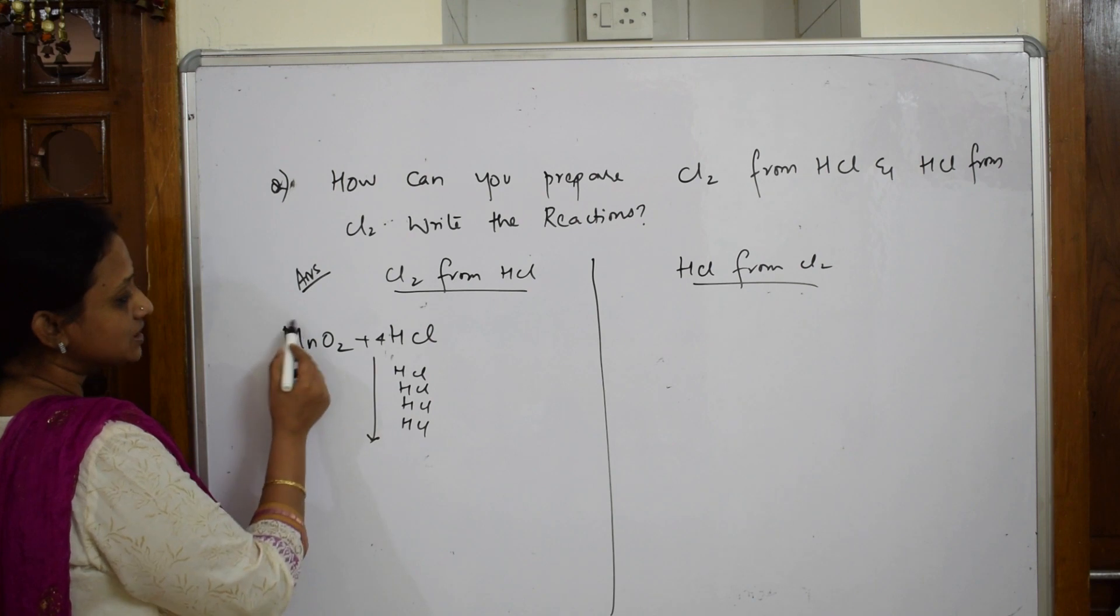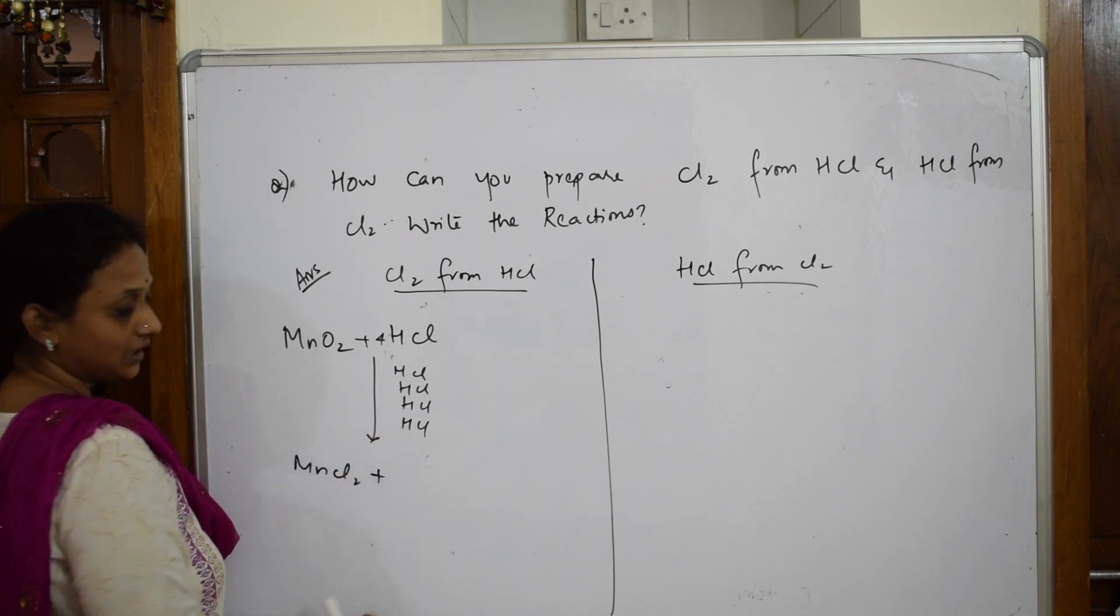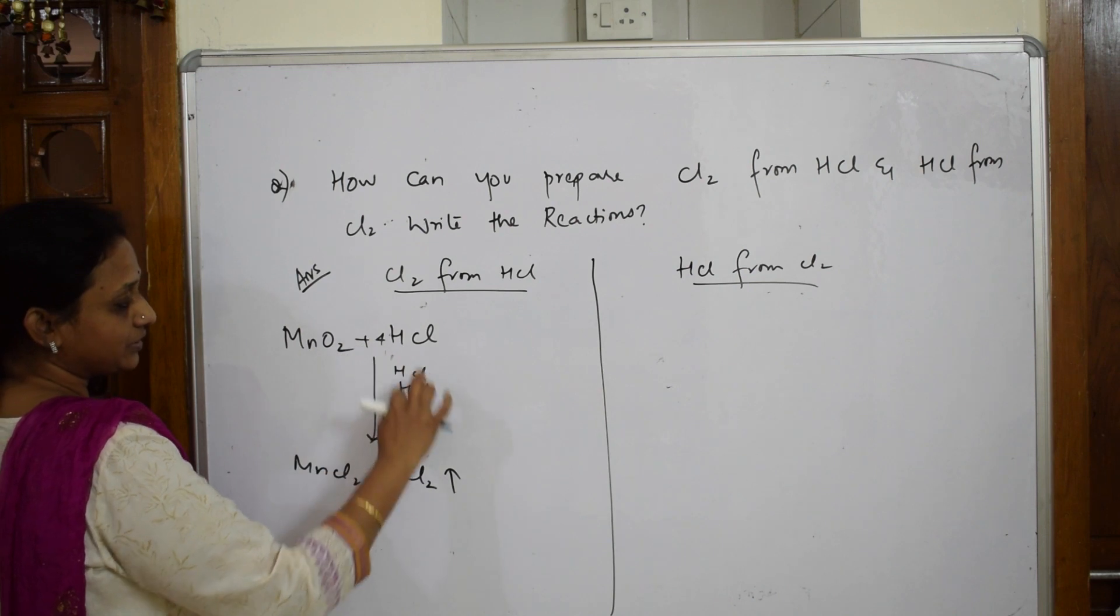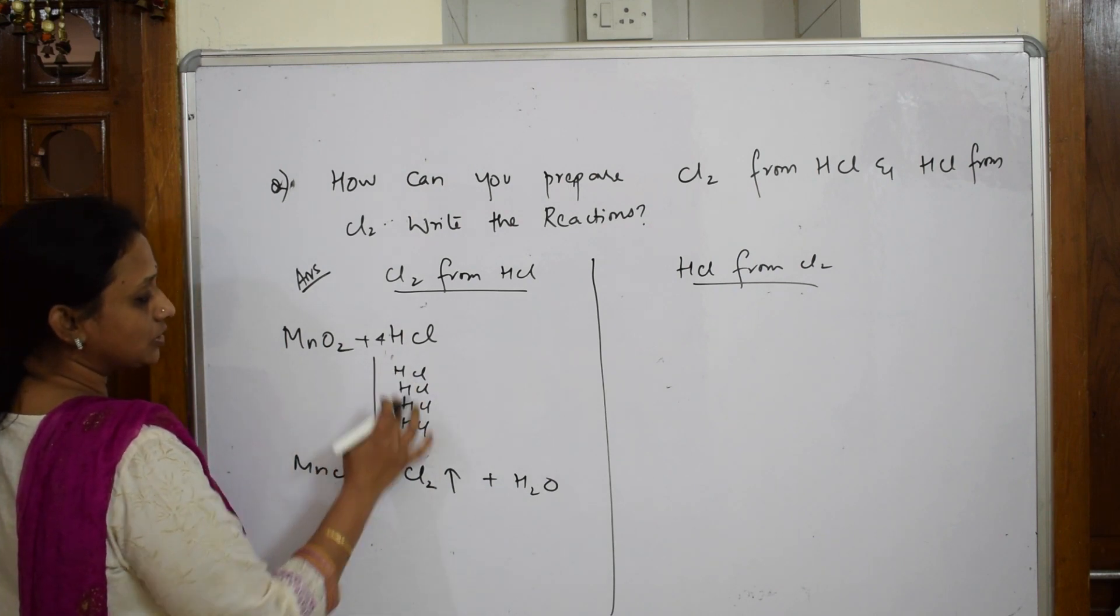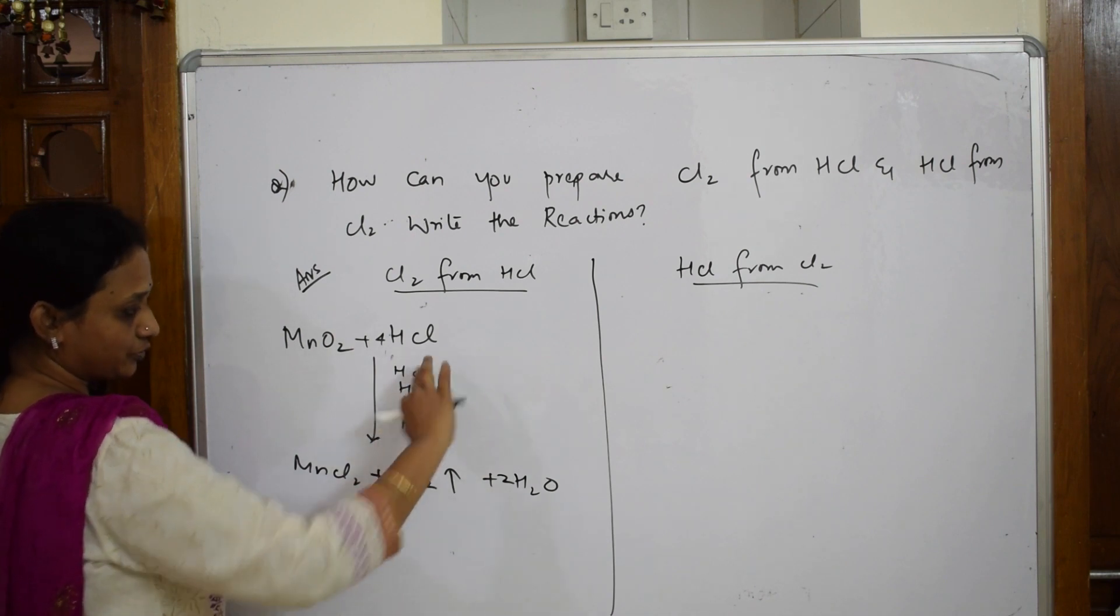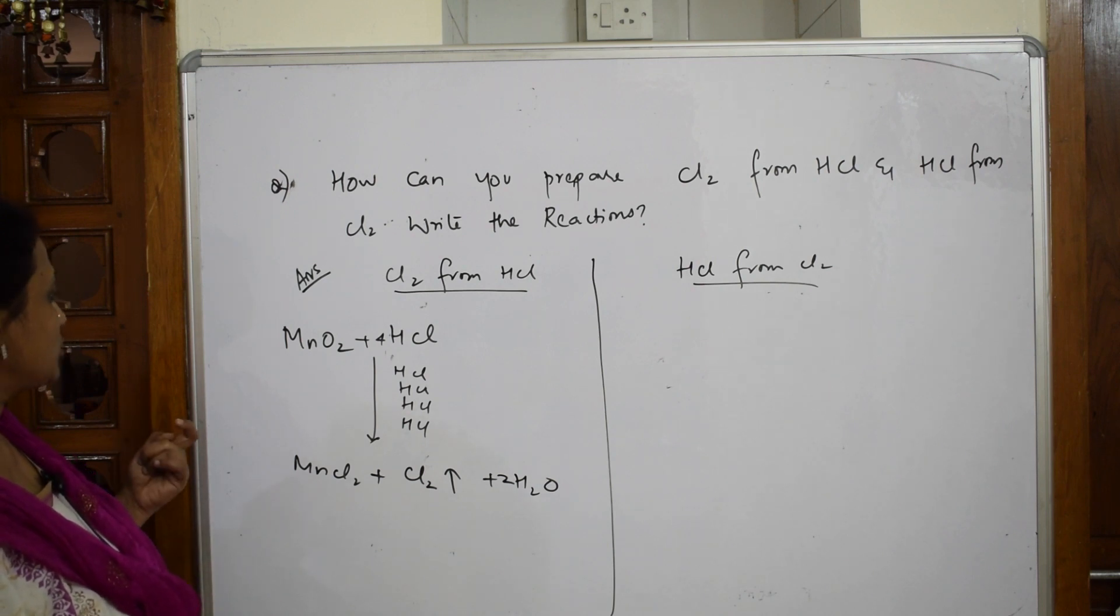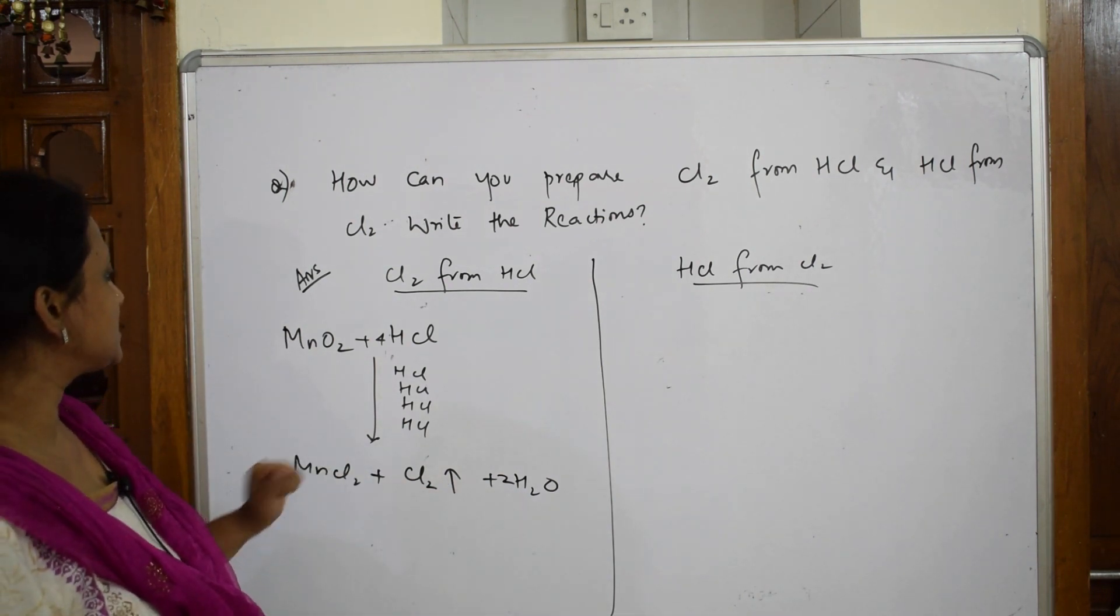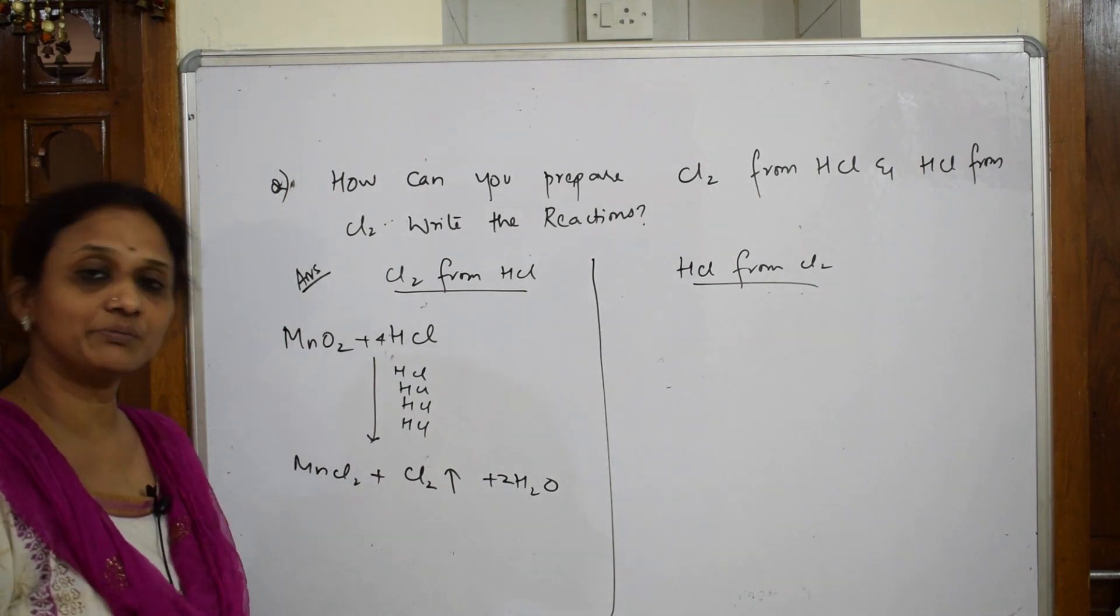First thing, MnCl2 comes out. The leftover chlorine comes out as chlorine gas. What are we left with? Hydrogens. How many? One, two, three, four. So it comes out as water molecules—four hydrogens, so two oxygens. Manganese is balanced, oxygen is balanced, hydrogen is balanced, and chlorine is also balanced.